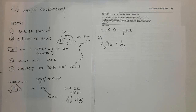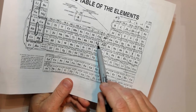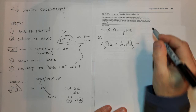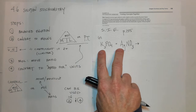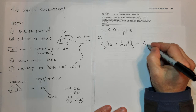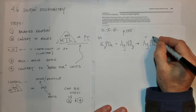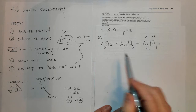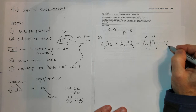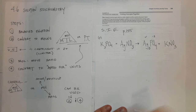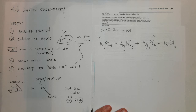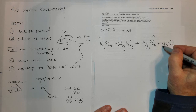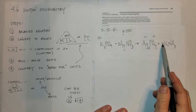Nitrate is NO₃⁻. In a precipitation or metathesis reaction we swap the cations, giving silver with phosphate. Silver has a +1 charge and phosphate has a −3 charge, so we need a subscript of 3, giving Ag₃PO₄. The other product is potassium (+1) with nitrate (−1), giving KNO₃. To balance: we need a 3 in front of AgNO₃ because there are 3 silvers, and a 3 in front of KNO₃ because there are 3 nitrates and 3 potassiums.